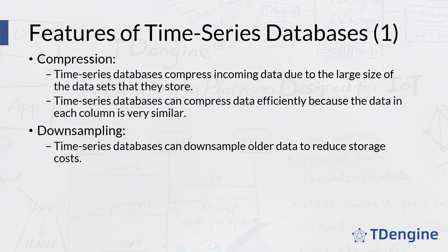Downsampling in a time series database context means removing some data points from a dataset in a regular manner. For example, if you collect one data point every second, you'll have 3,600 data points for every hour. You could then downsample that to 360 data points in an hour, which would retain one collected data point for each 10 seconds. One use case for downsampling is that data older than a certain time can be downsampled to reduce storage space — for example, collecting one data point per second and keeping all data points for 24 hours for real-time monitoring, then downsampling that dataset after 24 hours because those particular data points are no longer as important. Also, datasets with too many data points can be difficult to visualize, so downsampling can produce more readable reports or charts.